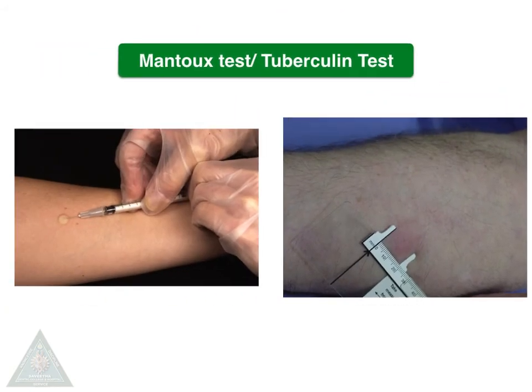For the Mantoux test, the tuberculosis antigen is injected into the subcutaneous tissue and it will cause an induration that is measured. If it is more than 10 mm, that is considered positive.